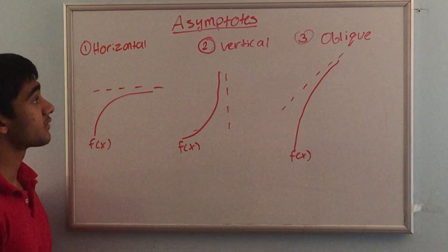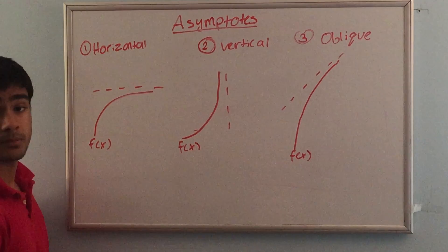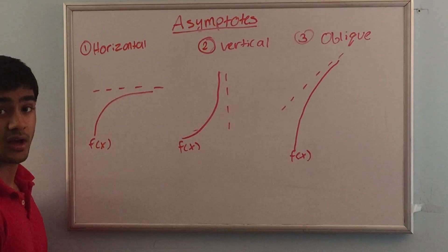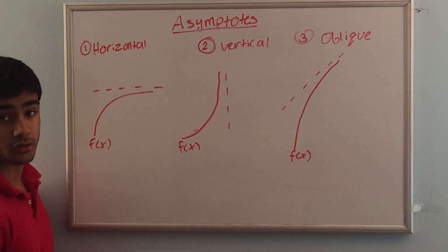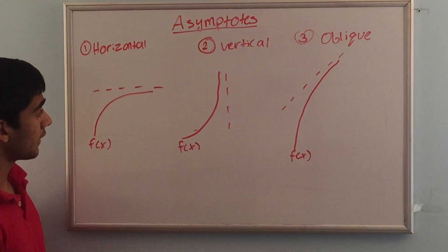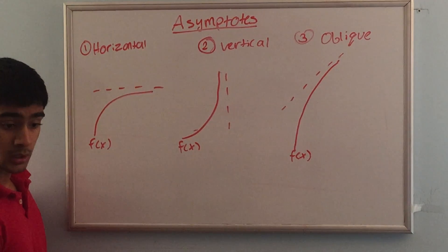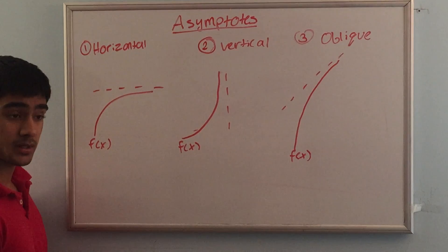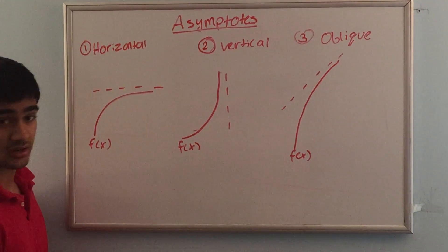In this video we will be discussing the asymptote and the general concept around it. An asymptote is any line that a function approaches when it goes to infinity. Normally the function will never cross this asymptote, and the distance between it and the asymptote will tend to come close to zero as the function approaches infinity.